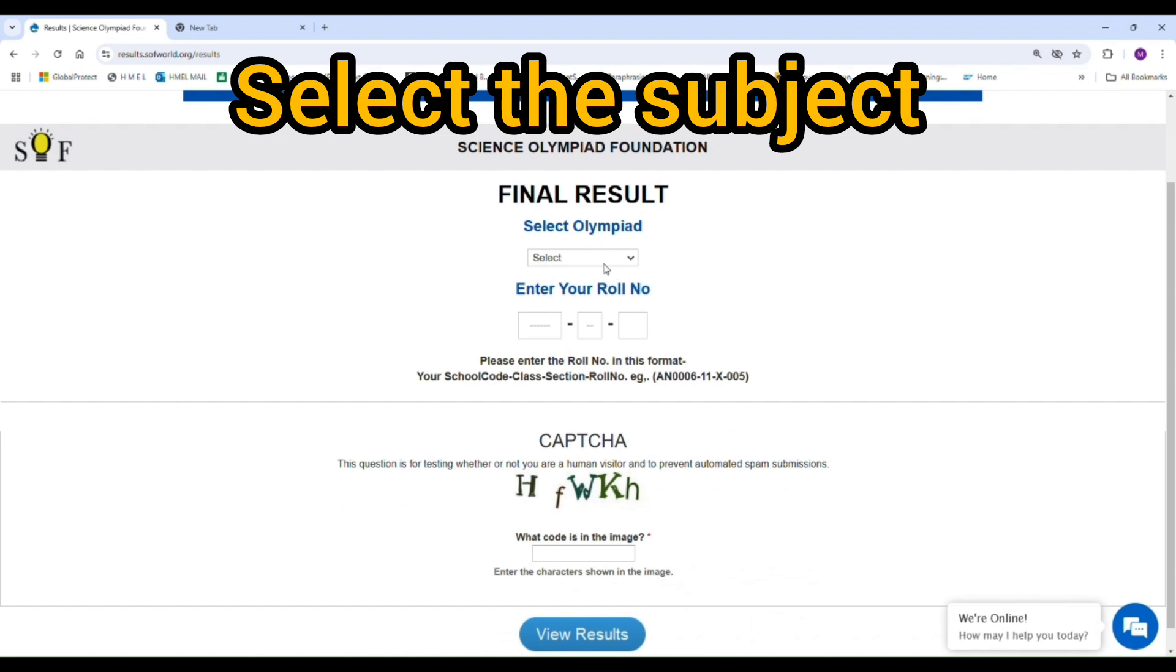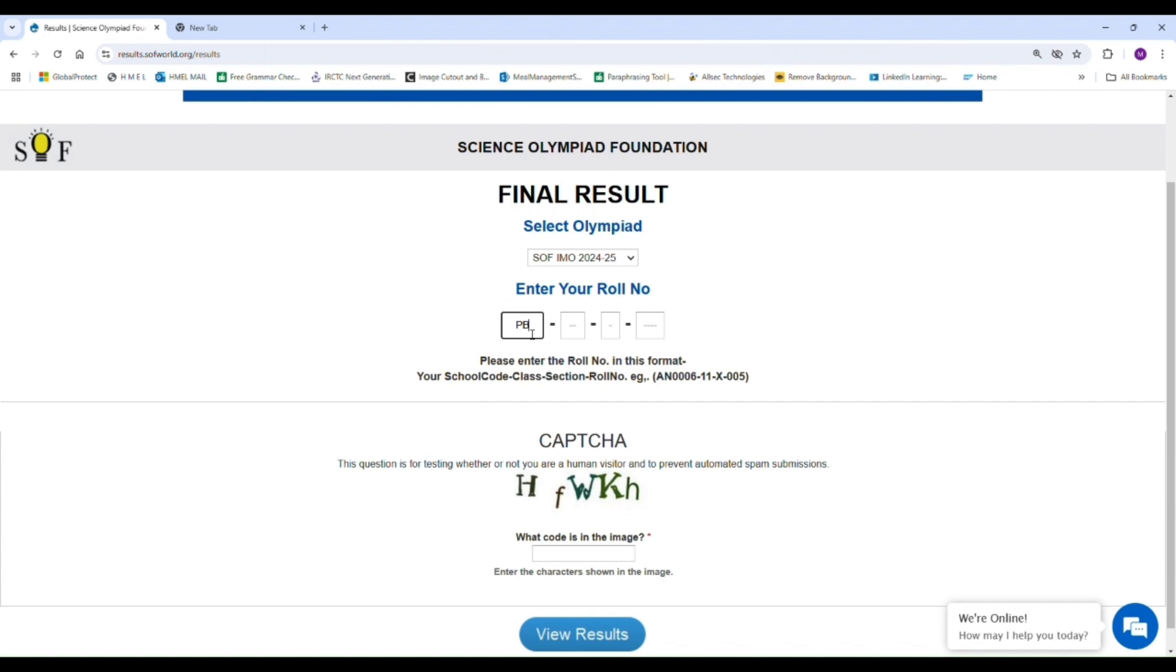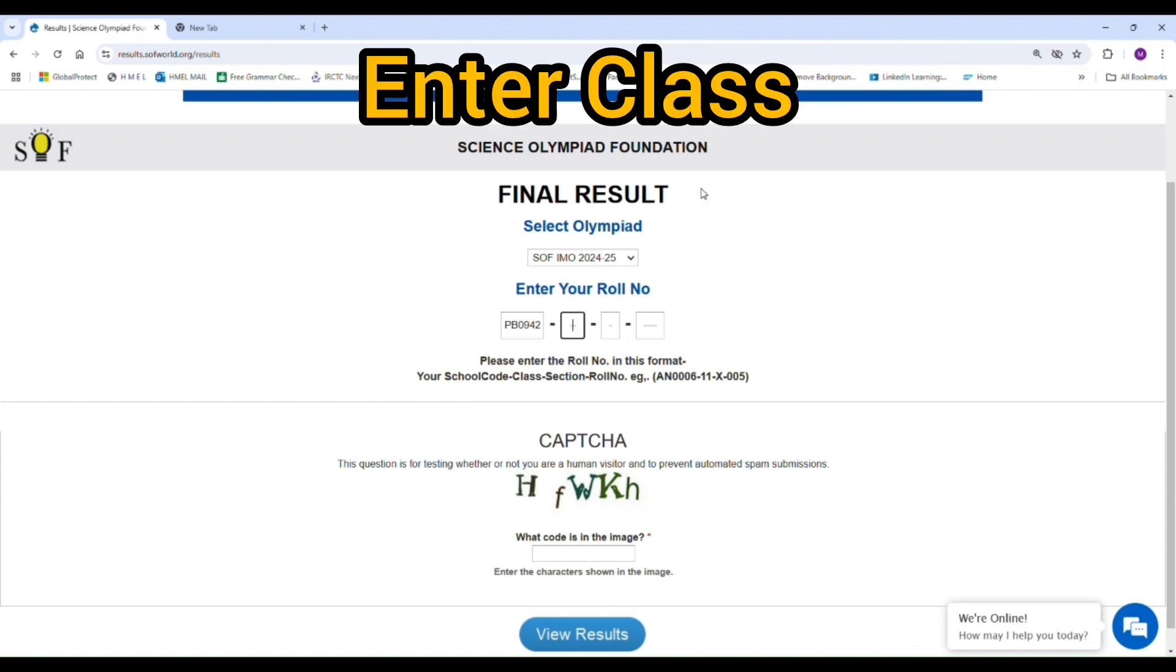After that, the result site will open. First select the paper you wish to see, then enter the school code followed by class, section, and role number.